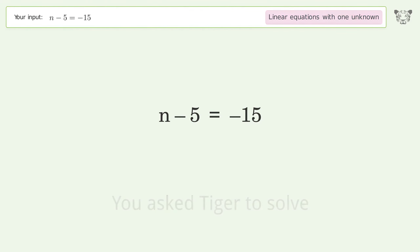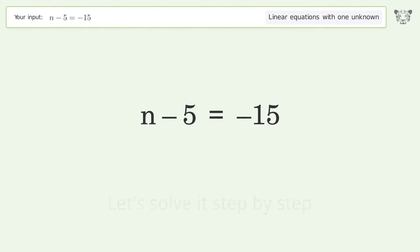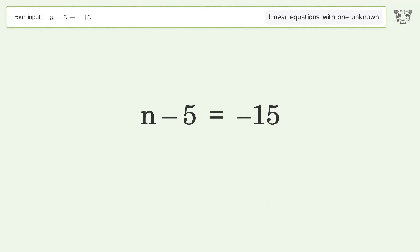You asked Tiger to solve. This deals with linear equations with one unknown. The final result is n equals negative 10. Let's solve it step by step.